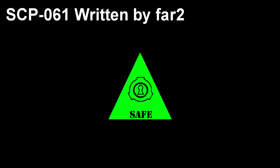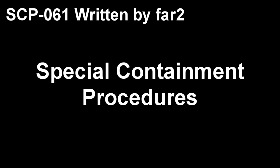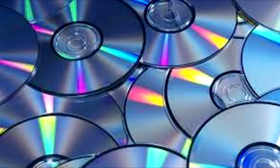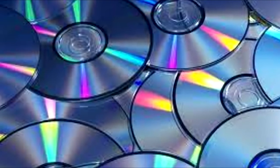SCP-061. Item number SCP-061. Object Class: Safe. Special Containment Procedures: The source code for SCP-061 is to be kept on a standard archival quality read-only data compact disc. Four copies of the CD-ROM with the source code are to be stored in separate maximum security inanimate object lockers.